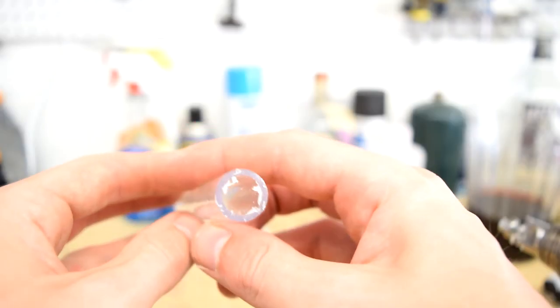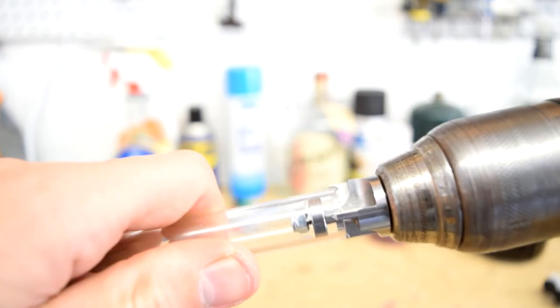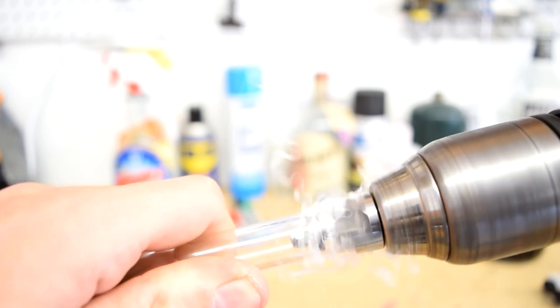Next, you will take the RFP and insert the ball bearing into the tubing. Once the tube is fully seated onto the bit, you can begin pulling the trigger and increasing the speed of the drill.